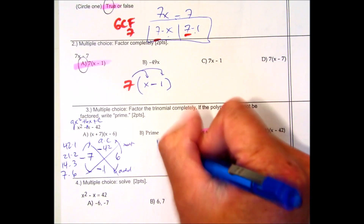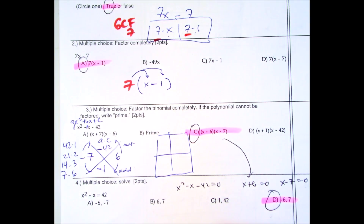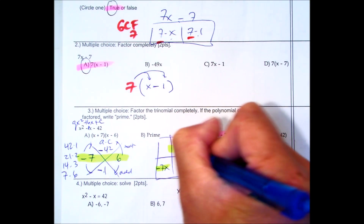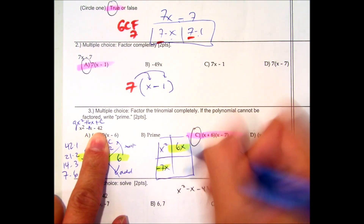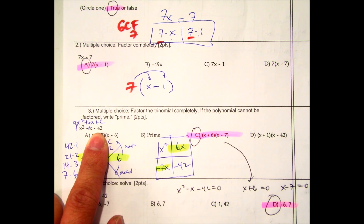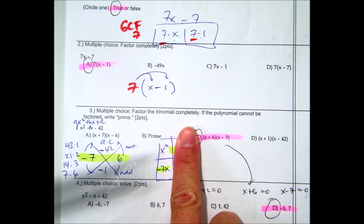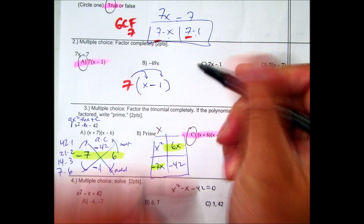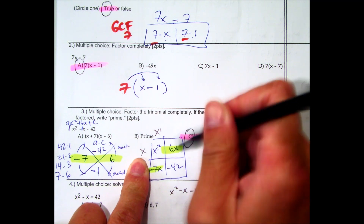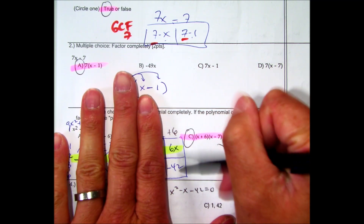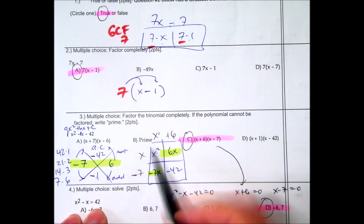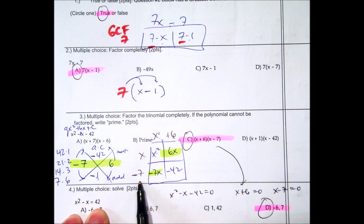I'm going to go ahead and now do the box. Those two values will go inside our box in those exact places, adding an x: negative 7x and 6x. Write x² and negative 42. Now thinking about factors — what's the greatest common factor? They both have an x in common going both directions. x times x is x², x times something equals 6x, that is 6. The greatest common factor going the other direction is negative 7. So x + 6 and x − 7 is the answer, choice C.